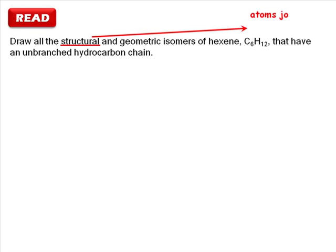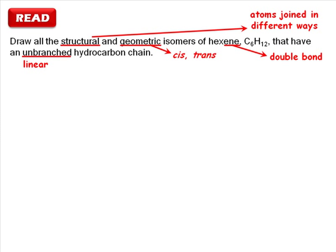Structural isomers are when the same atoms are joined in different ways. Geometric isomers can arise in compounds with a double bond, where the double bond can be either cis or trans. Since the molecule we have to draw is hexene, we have the required double bond. Unbranched just means that we only have to look at linear molecules and don't have to worry about substituents.